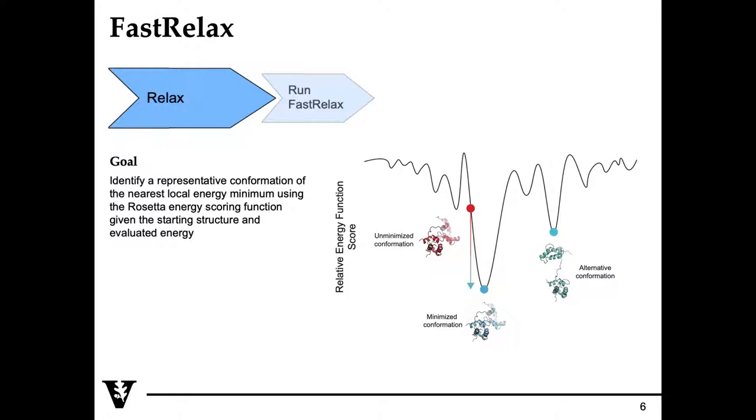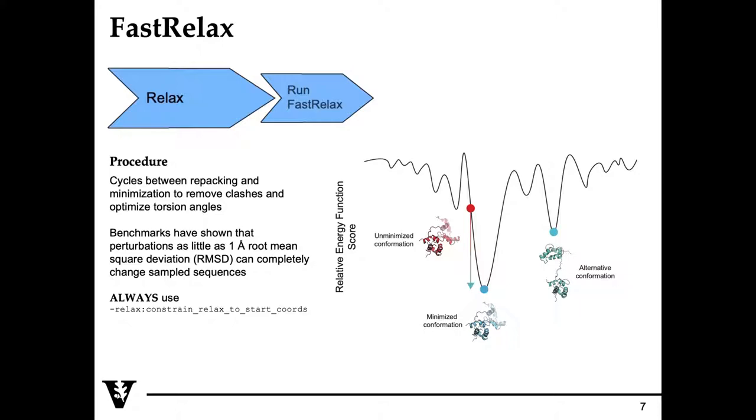You achieve this by using cycles of repacking, where basically you reorient the side chains or optimize the rotamer configuration of your protein to remove clashes, and then you use minimization to optimize the torsion angles.